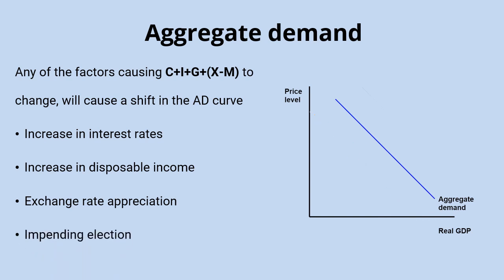Finally, an election looming might encourage the government to increase spending in the hunt for more votes. Increases in government spending — part of the C plus I plus G plus X minus M equation — would boost aggregate demand and shift the curve to the right.